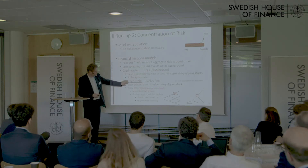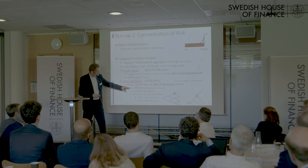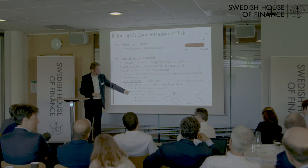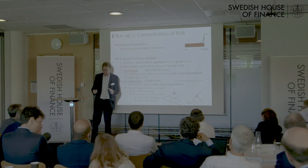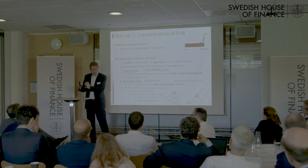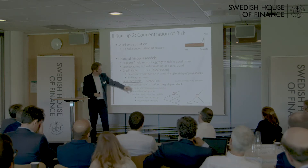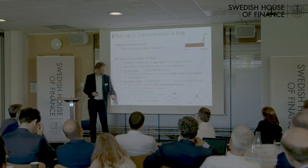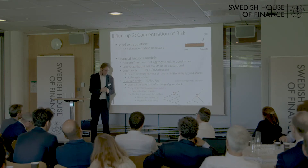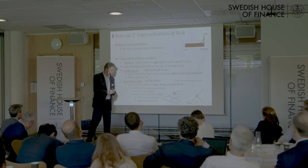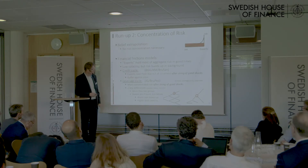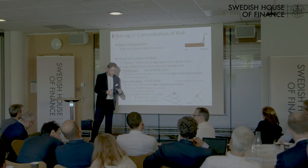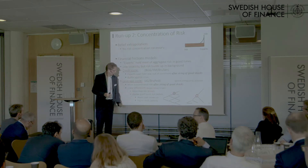What's key to getting the leverage cycle? Besides heterogeneous beliefs, what's really important is having more than two groups. In these models you typically have farmers and gatherers or households and experts. In John Geanakoplos's work you have a continuum of types, and the whole asset is loaded more and more to the most optimistic agents after a sequence of good news. That's one key ingredient: a continuum of investor groups, not just two.